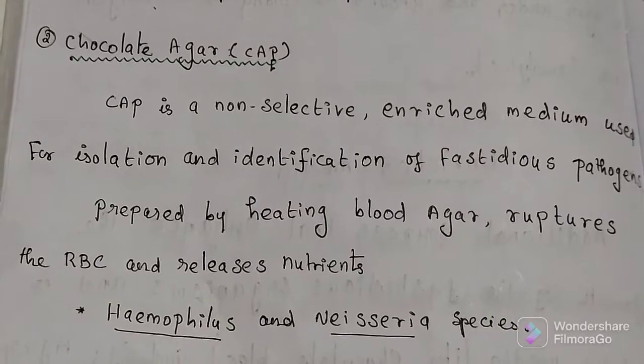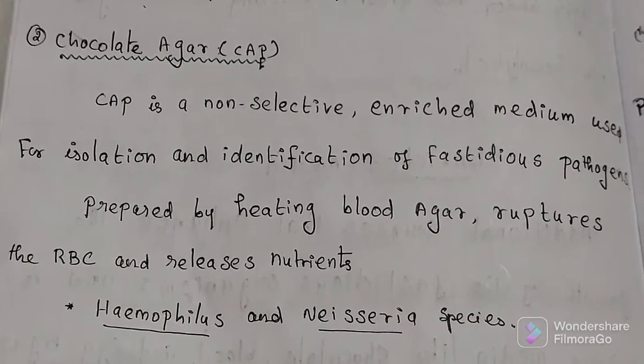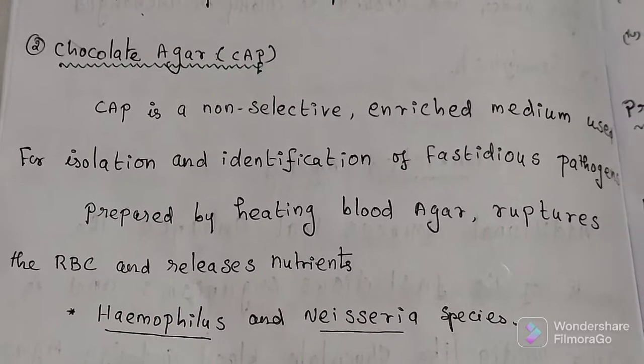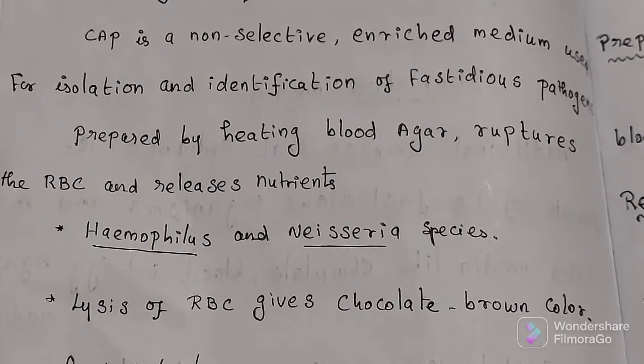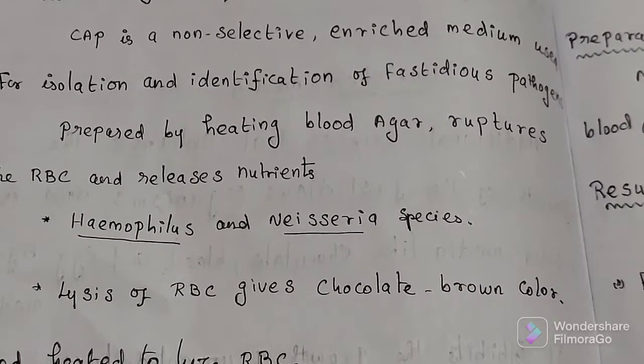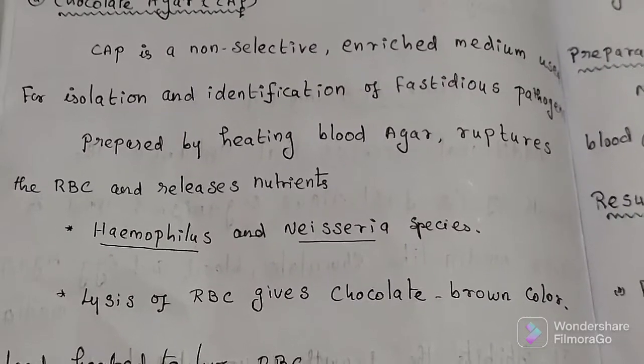Chocolate agar is used for growing fastidious respiratory bacteria such as Haemophilus influenzae and Neisseria species. Lysis of RBC gives chocolate brown color, so it has that name chocolate agar medium.